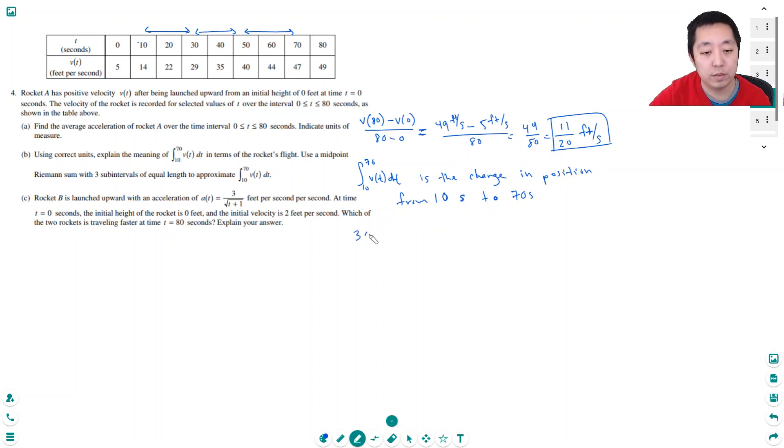So it's equal to 20 seconds times the height at the midpoint, which is 22 feet per second, plus 20 seconds times the midpoint of this rectangle, which is 35 feet per second, plus 20 seconds times this midpoint, which is 44 feet per second.